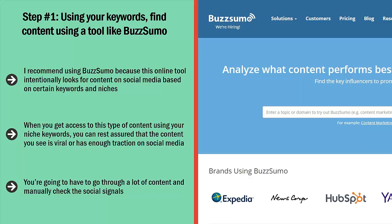You don't have to use BuzzSumo — there are other similar tools out there. Regardless, you need to use that kind of tool. Otherwise, it's going to be very hard to do this manually. You're going to have to go through a lot of content and manually check the social signals. It's very tedious, it burns a lot of time, and in many cases you are still not sure if you got the right content.